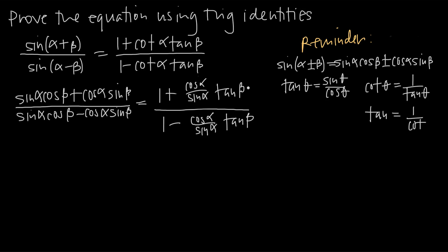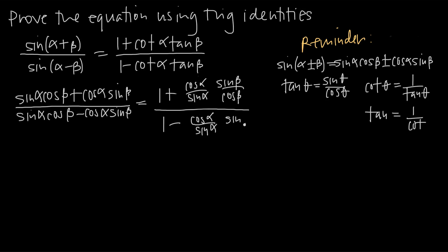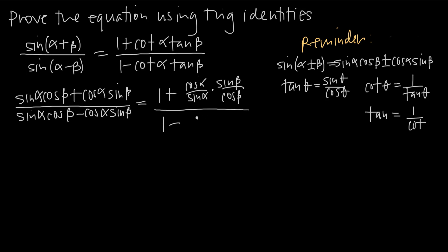We do the same thing with tangent(beta): since tangent equals sine over cosine, we replace tangent(beta) with sine(beta) over cosine(beta) in both the numerator and denominator. Now we have fractions being multiplied together. Rewriting: in the numerator we have cosine(alpha)·sine(beta), and in the denominator we have sine(alpha)·cosine(beta).